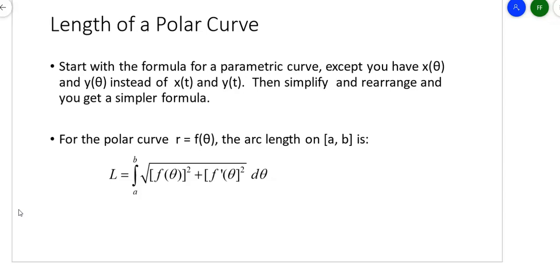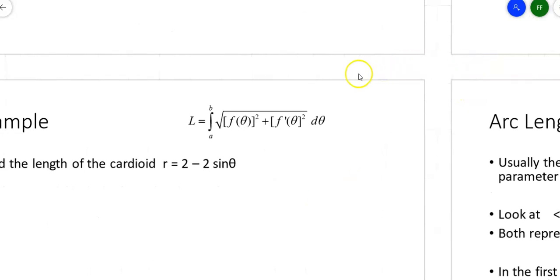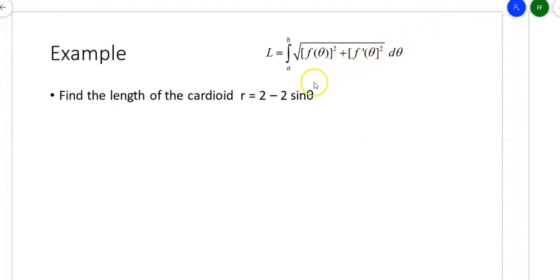What's under the radical is that hypotenuse of a right triangle, and you're adding all those little hypotenuse pieces together. The setup for polar curves is not terrible, but sometimes the work gets a little long. This example is a cardioid — 2 − 2sinθ — because the constant and the coefficient of sine are the same. It's a heart shape, with the top at π/2 and the bottom at −π/2.